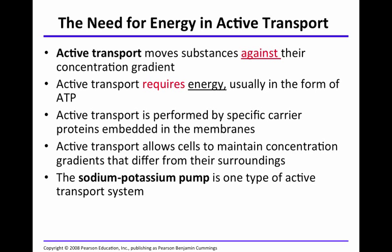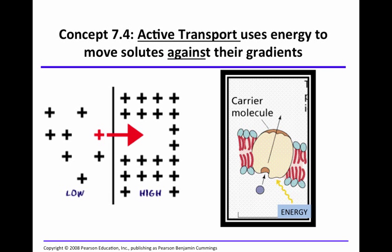One type of active transport system is the sodium-potassium pump. Active transport uses energy to move solutes against their gradient. If you recall with passive transport, solutes were moving down their concentration gradients from areas of high concentration to areas of low concentration. But in active transport, you're using an energy source such as ATP, moving solutes from an area of low concentration to one of high concentration.